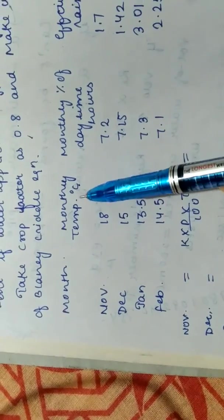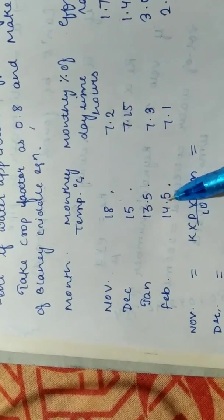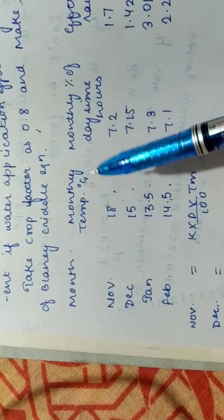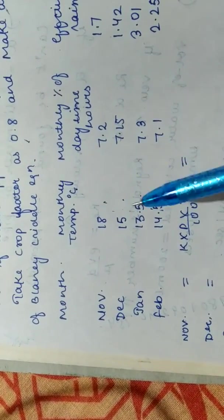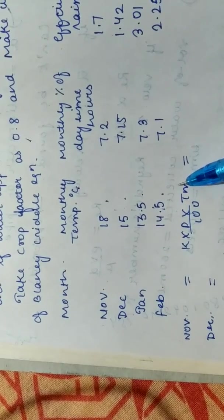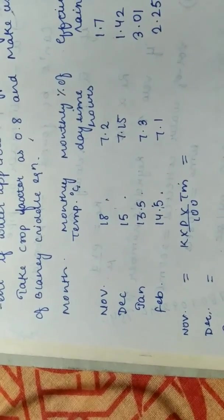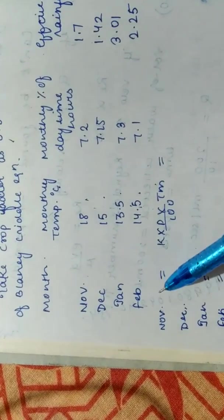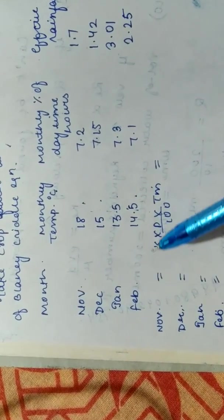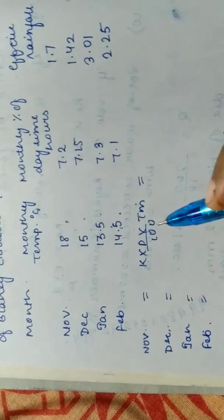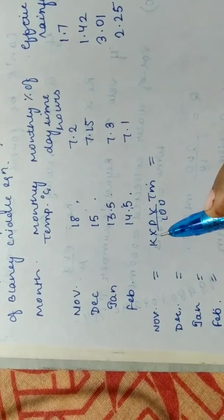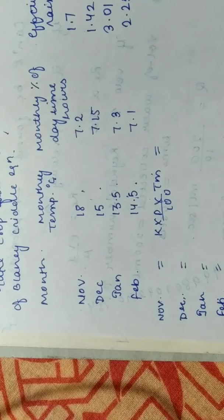So here, as you can see, all the temperature values are given in degree Celsius. So the first step is to convert all this into Fahrenheit and then multiply it with the other two terms to get the PET value for that particular month. PET value or evapotranspiration is the same. So we will quickly calculate evapotranspiration for all the four months.